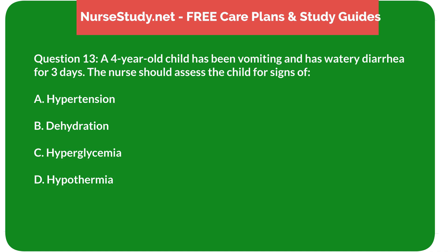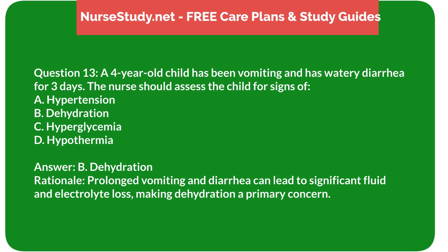Question 13: A four-year-old child has been vomiting and has watery diarrhea for three days. The nurse should assess the child for signs of: A) hypertension, B) dehydration, C) hyperglycemia, D) hypothermia. Answer: B) dehydration. Rationale: Prolonged vomiting and diarrhea can lead to significant fluid and electrolyte loss, making dehydration a primary concern.